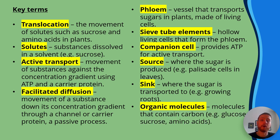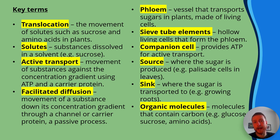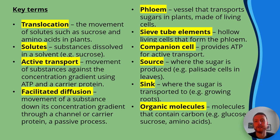Organic molecules are molecules that contain carbon. A classic one you need to know for AQA A-level biology is glucose, but also sucrose and amino acids.